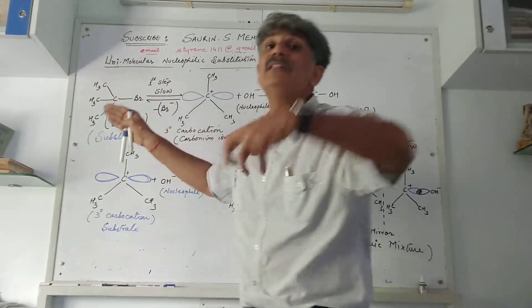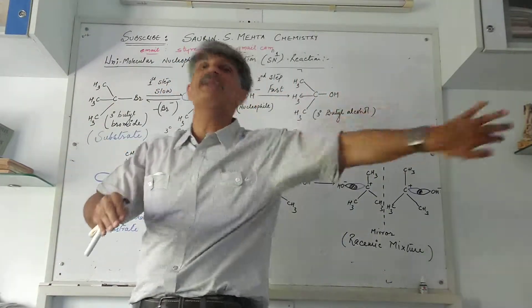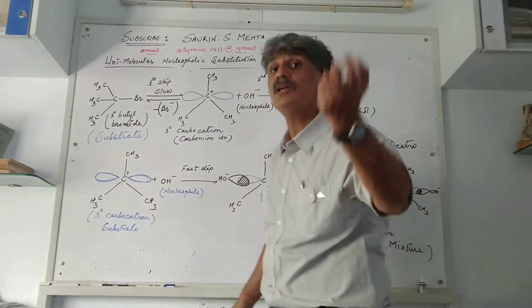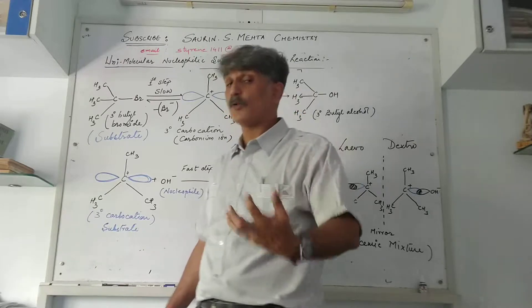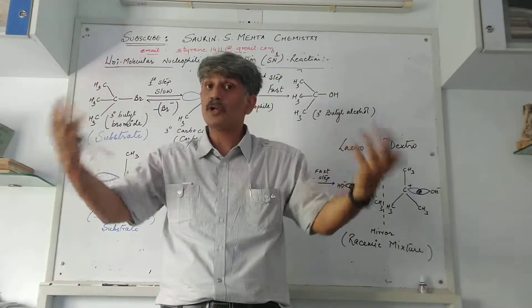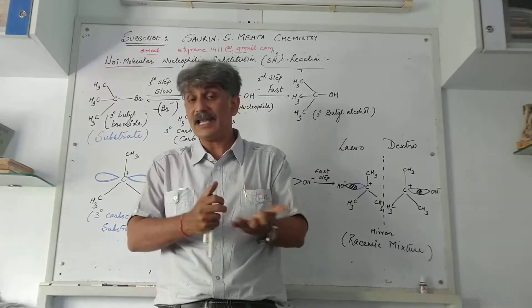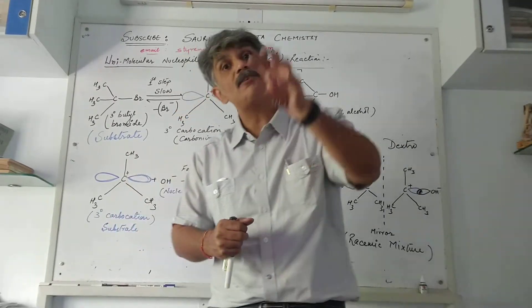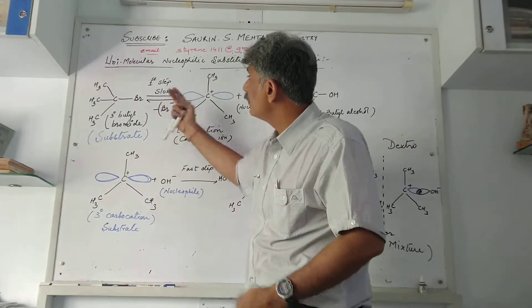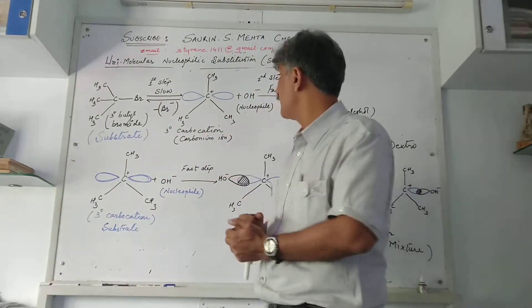The Br with its minus sign, bromide, separates from the carbon and as a result tertiary carbocation is formed. This stage is slow because it is a rate determining step - the first stage is always a slow step.